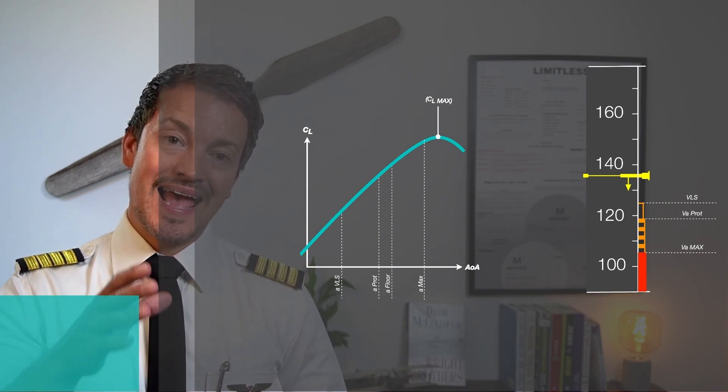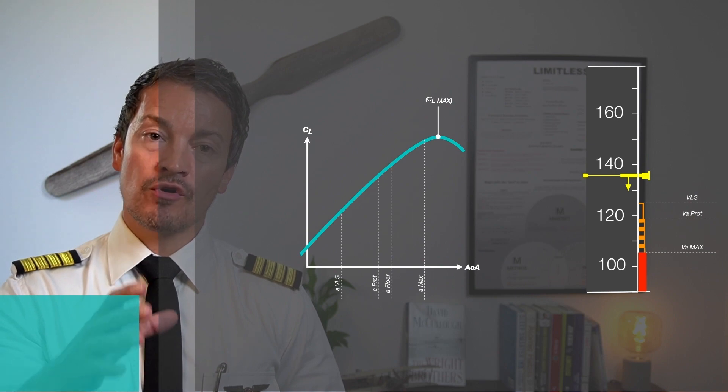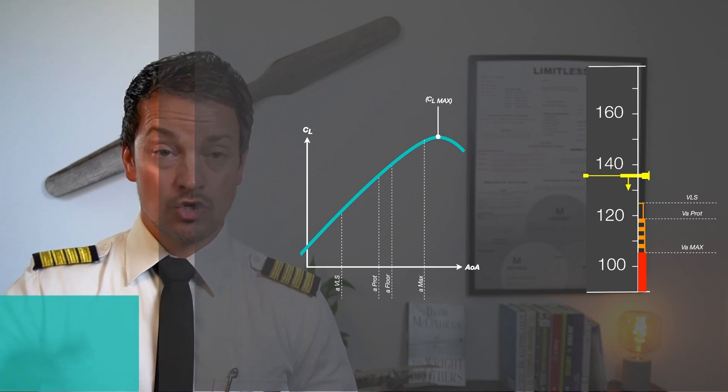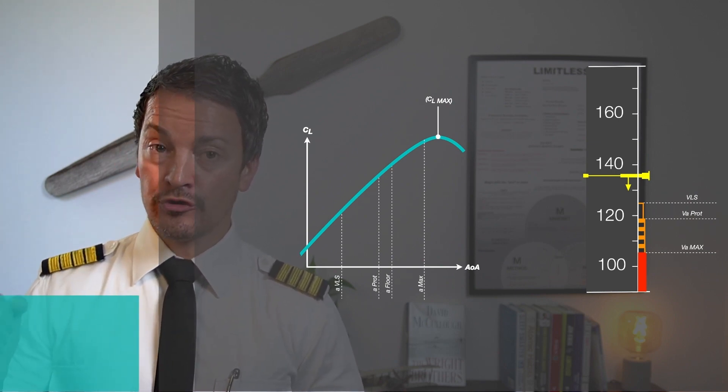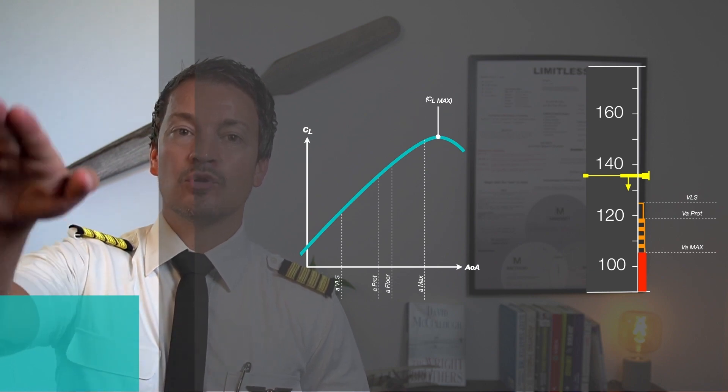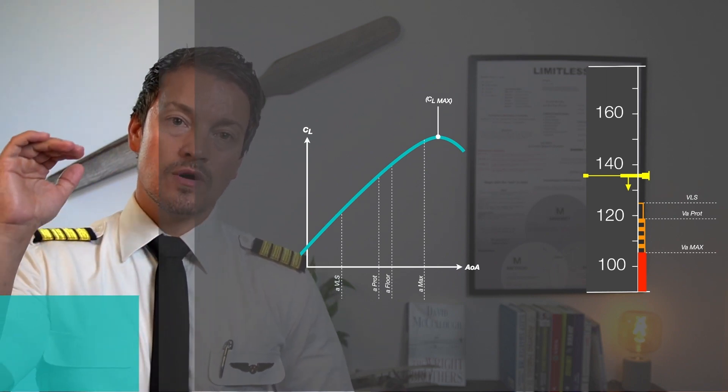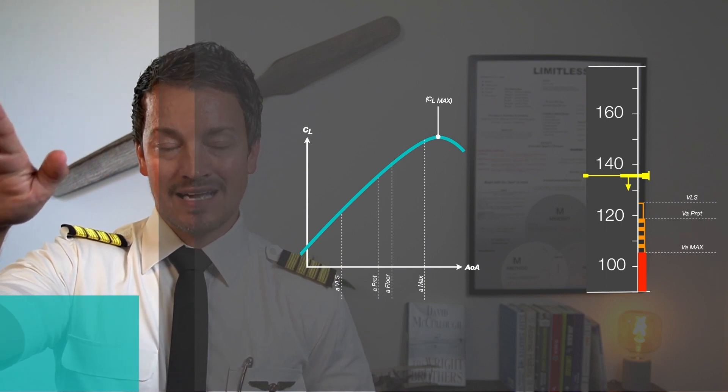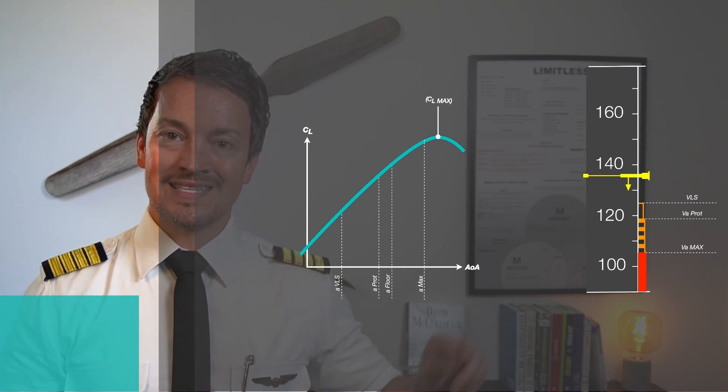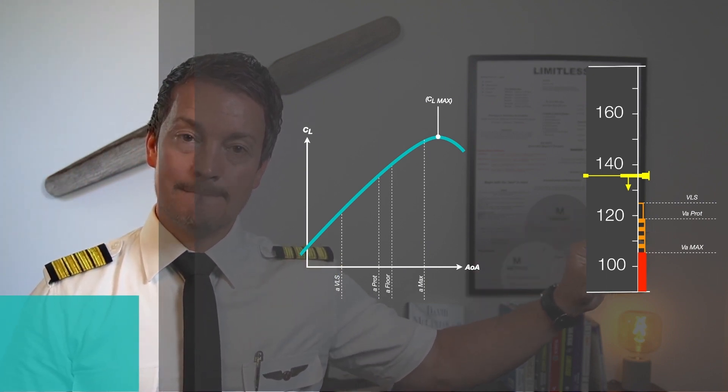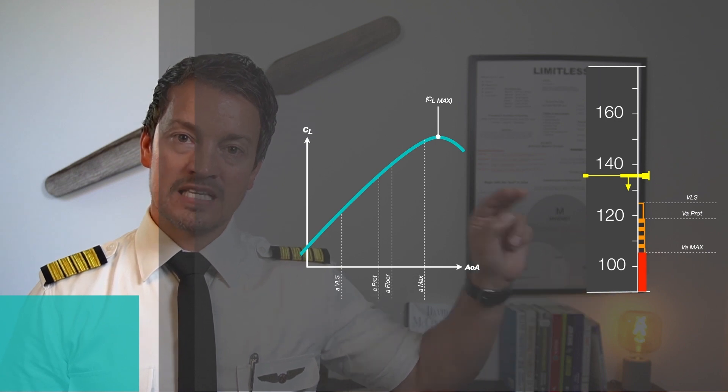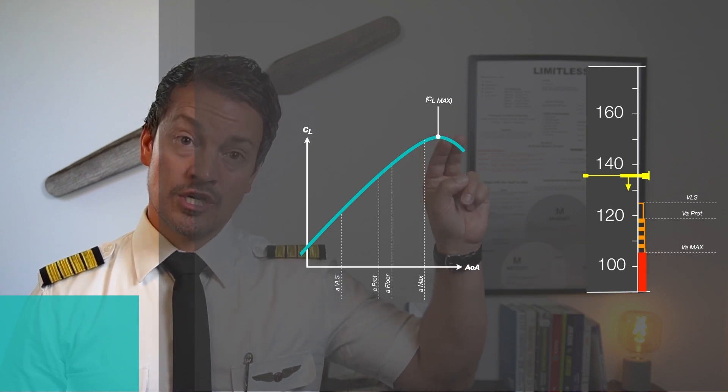When the speed drops down to V-alpha max, the protection is active in a way that it overrides what you're doing on the side stick. So while I'm sitting and holding full deflection back, the aircraft will no longer allow the pitch attitude to be increased. In fact, it might start to slightly lower the nose to maintain that speed as the bare minimum. It has a very small margin to the onset of a stall here.